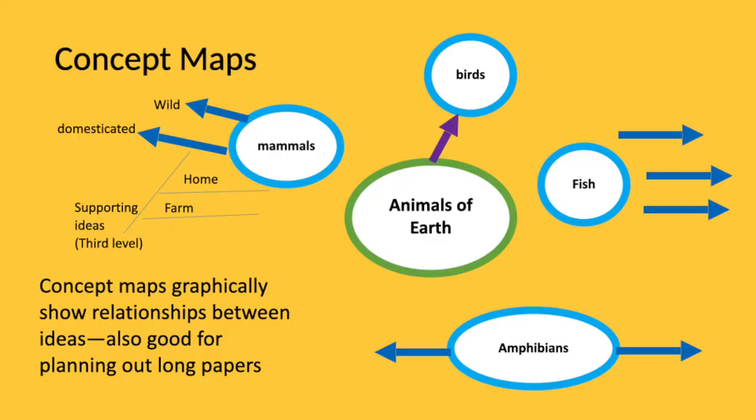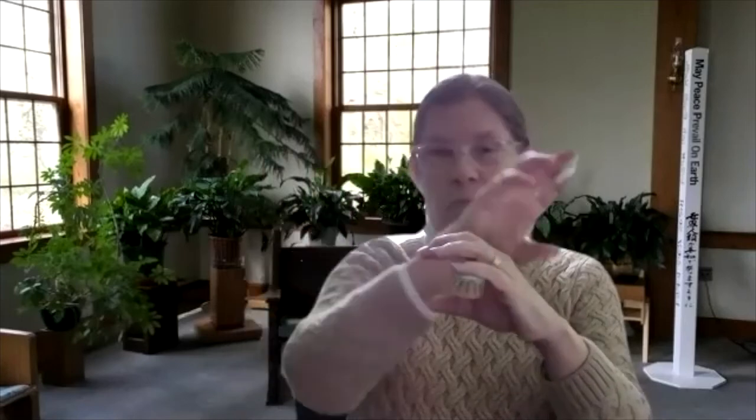There's also concept maps that look like speaking bubbles. In the center, you have, going back to our animals example, you have animals of the earth in the center, and then you have bubbles coming out from there with arrows or lines. So you have amphibians, fish, birds, mammals around that central animals of earth.